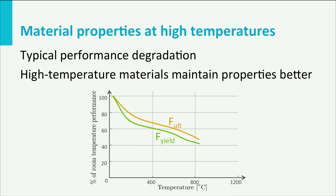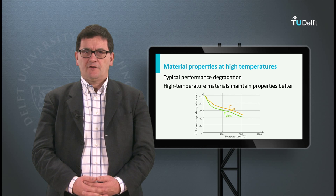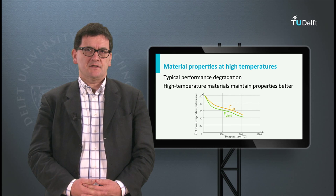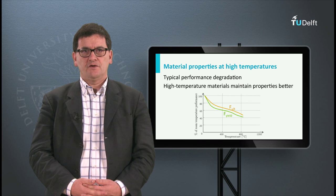In this picture you see the relative values for the ultimate strength and the yield strength of a titanium alloy as a function of temperature. Reading from this plot we can see that there is a significant drop in values at about 150 degrees Celsius. After that initial drop the properties decrease slowly. At 500 degrees Celsius, for example, still more than 50% of the room temperature property values remain.